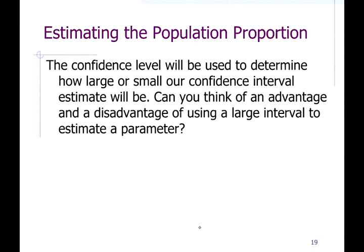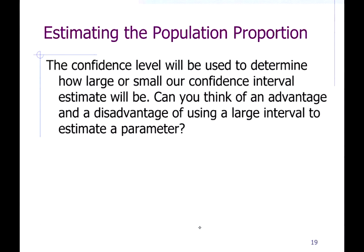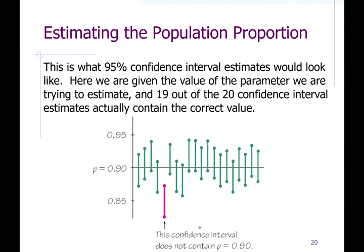The confidence level determines how large or small our confidence interval estimate should be. For really high levels of confidence, you'll have a larger interval. The larger interval is good because it's more likely to contain the correct value, but it's bad because the larger the interval, the less specific the results are. So there are two competing factors: you want to be right, and you want to be specific.